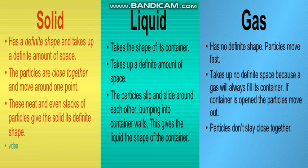Depending upon the arrangement of these particles, the arrangement is different in different matter. Due to their arrangement, matter is classified into three forms or states. The state of matter depends on the arrangement of its particles, and also on the amount of space between them. So arrangement and spacing are the two basic things.